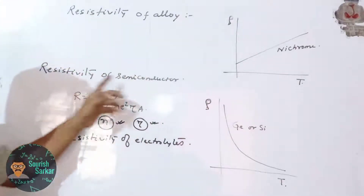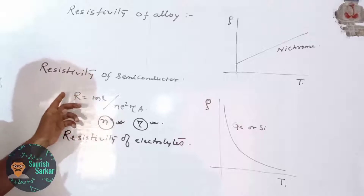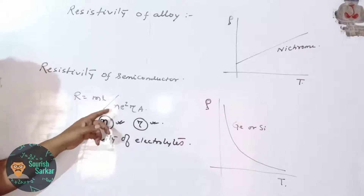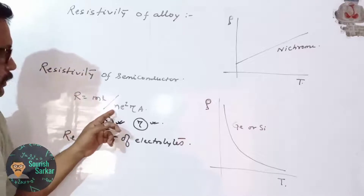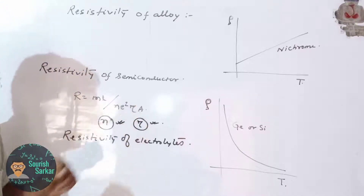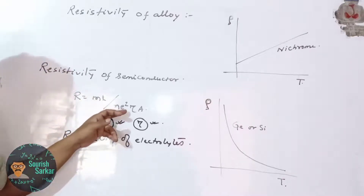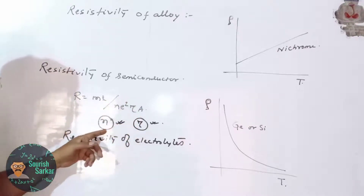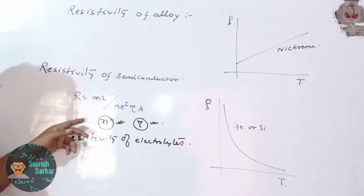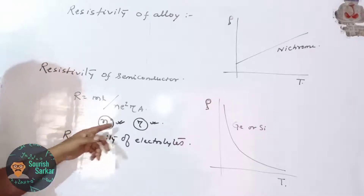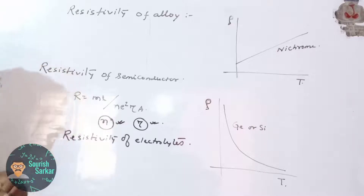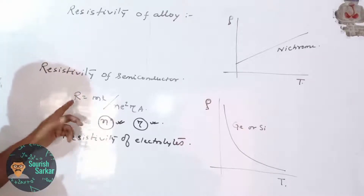For semiconductors, resistivity depends on resistance, where R equals ml divided by n·e²·τ·A. Here n is the number of free electrons per unit volume and tau is the relaxation time — the interval between two successive collisions. With increasing temperature, n increases and tau decreases, but the rate at which n increases is much larger than the rate at which tau decreases, so the resistivity of the semiconductor decreases with increasing temperature.